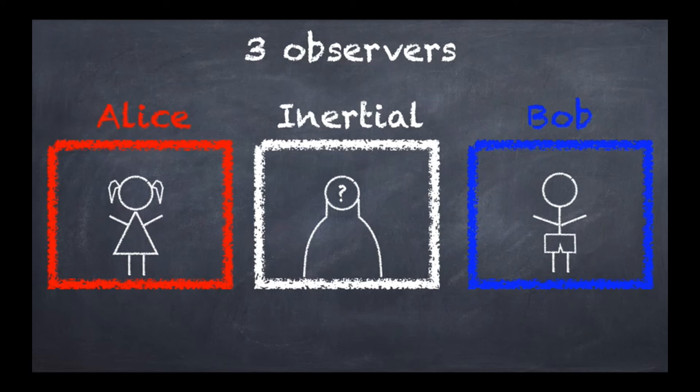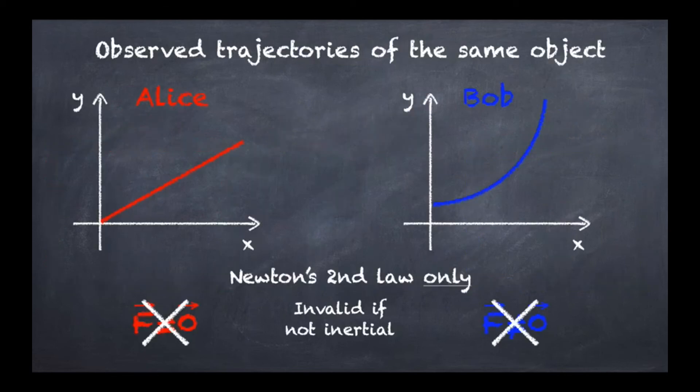As a result, what happens is that when we reach this situation, you see I've crossed the two situations here: F equals 0 and F is different from 0. That's because now we are not applying anymore Newton's second law only, but we are using the first law as well. And these basically judgments become invalid as soon as the first law is introduced and if neither Alice nor Bob are inertial observers.